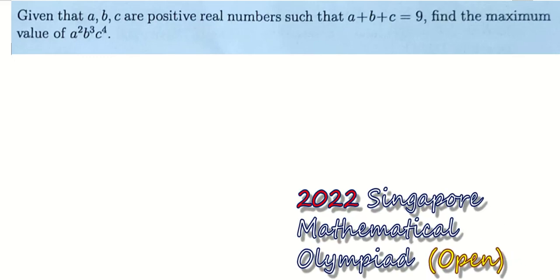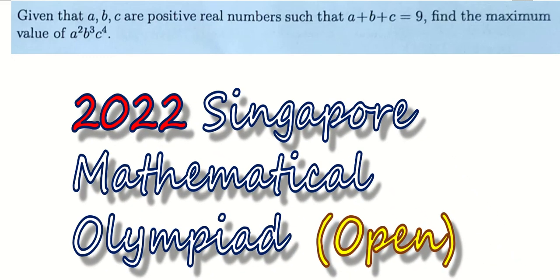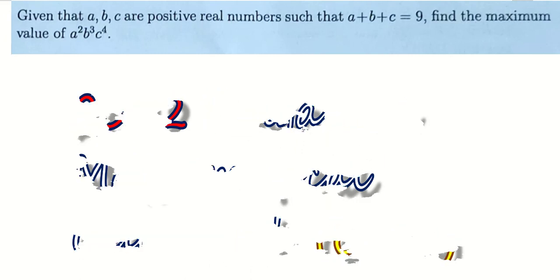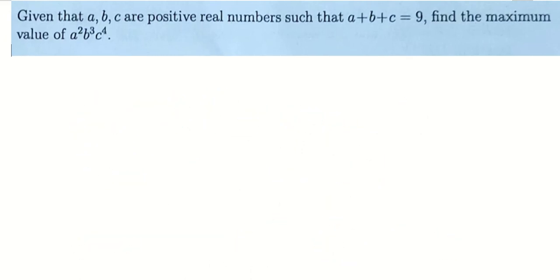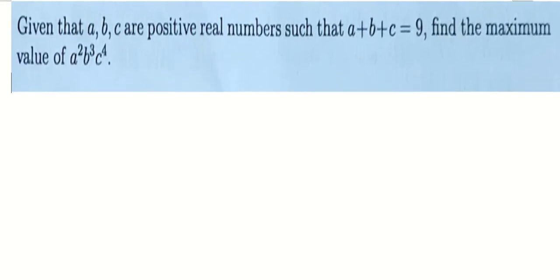For today, let's look at this question from SMO 2022 open section. Given that A, B, C are positive real numbers such that the sum equals to 9, you're asked to find the maximum value of A power 2 times B power 3 times C power 4.